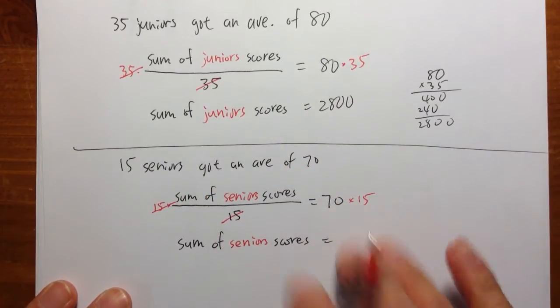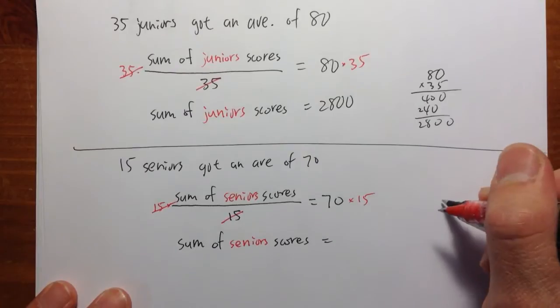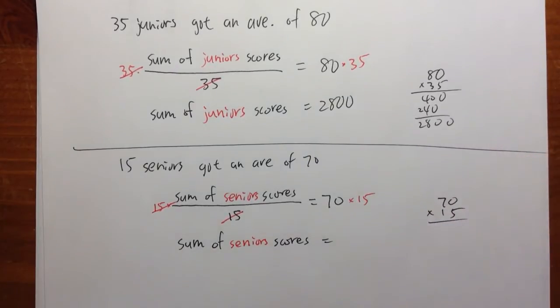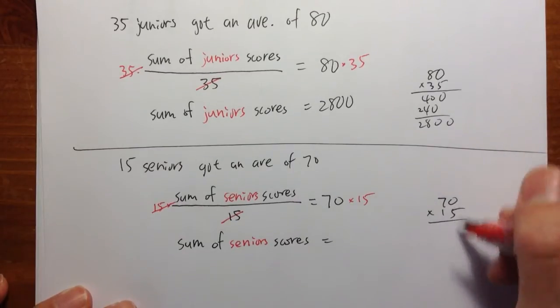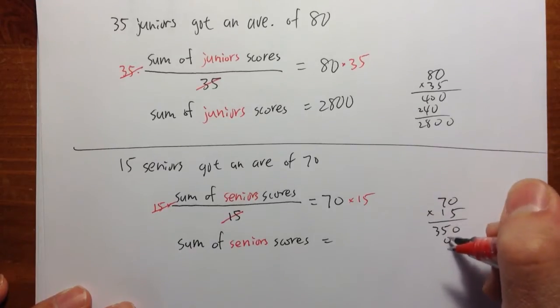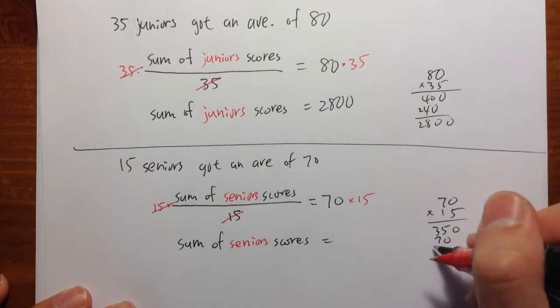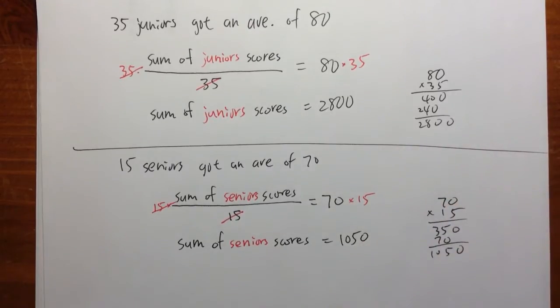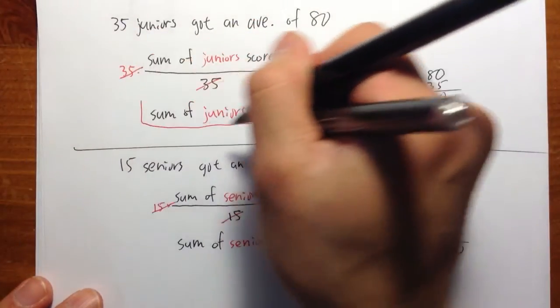So 70 times 15, again, I just want to do this to show you guys that I'm actually doing some calculations. I don't use a calculator for this. So 5 times 0 is 0, 5 times 7 is 35. 1 times 0 is 0, 1 times 7 is 7. And that's 0, 5, that's 10, 10, 1050. So these are the two things that we are going to need.